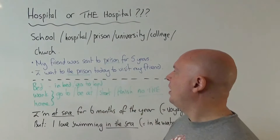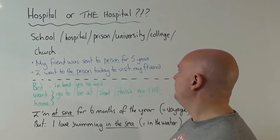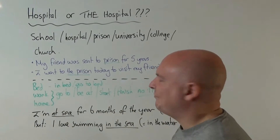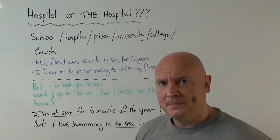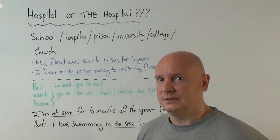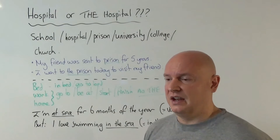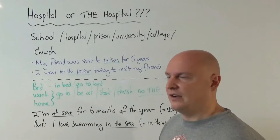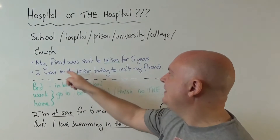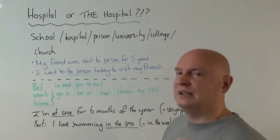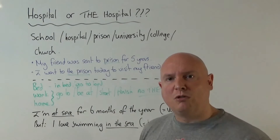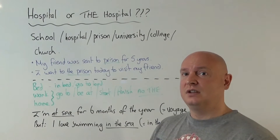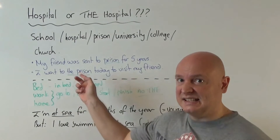I went to the prison today to visit my friend. In the first example, my friend was sent to prison because he's a naughty criminal — he kept stealing sweets from supermarkets and they sent him to prison for five years. But I went to the prison today to visit my friend. Am I a criminal or am I visiting? I'm visiting. So I'm going to prison not because I'm a criminal — he is.